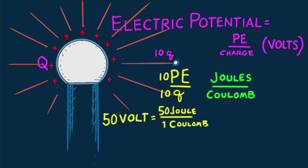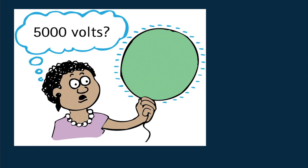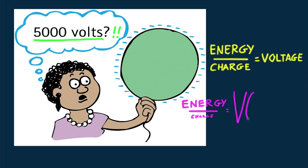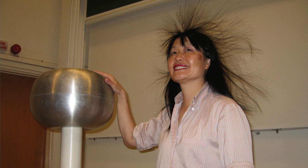You'll seldom hear electrical types talking about electric potential energy. Instead, they talk about voltage — electric potential. If you rub a balloon on your hair, the balloon becomes negatively charged, like up to 5,000 volts as shown here. That would release thousands of joules of energy if the charge were one coulomb. However, one coulomb is a very large amount of charge. The charge rubbed on hair is typically less than a millionth of a coulomb. Therefore, the amount of energy associated with the charged balloon is very small, even though the energy per coulomb — the voltage — is very high. A modest amount of energy divided by a tiny amount of charge produces a huge voltage. That's why being next to a 5,000 volt Van de Graaff generator isn't harmful, even when touching it. High voltage means high energy only if a great amount of charge is involved.